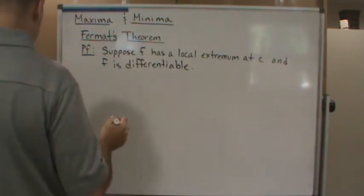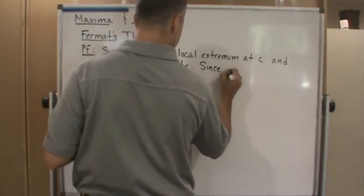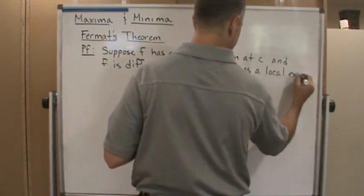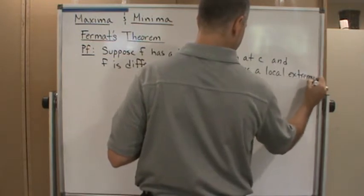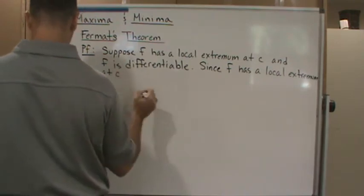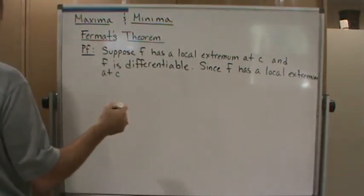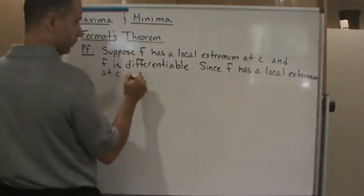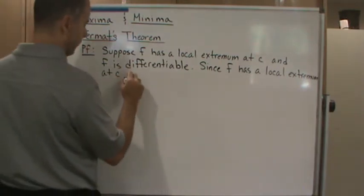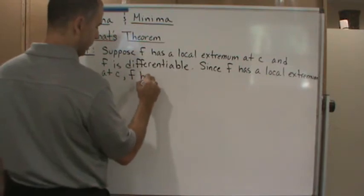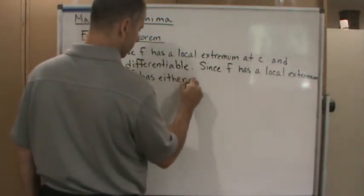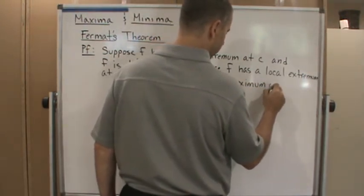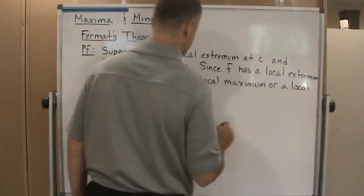Since f has a local extremum at c, f has either a local maximum or a local minimum at c. That's by definition of a local extremum.